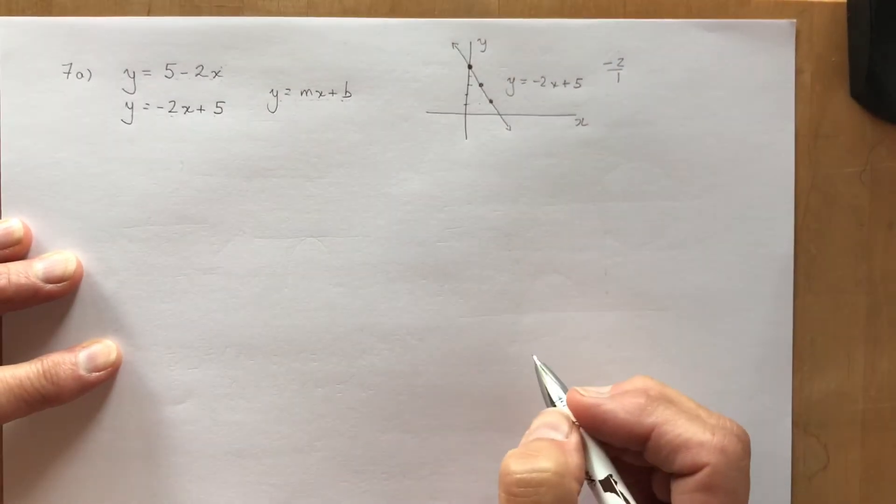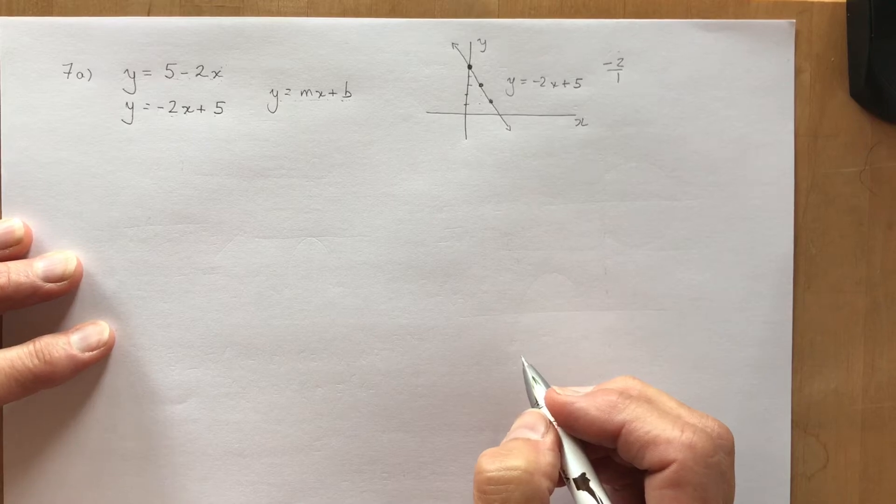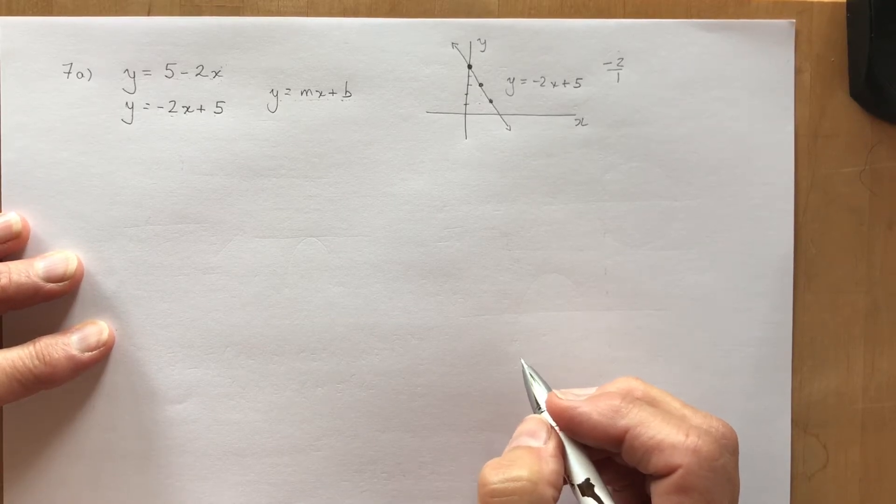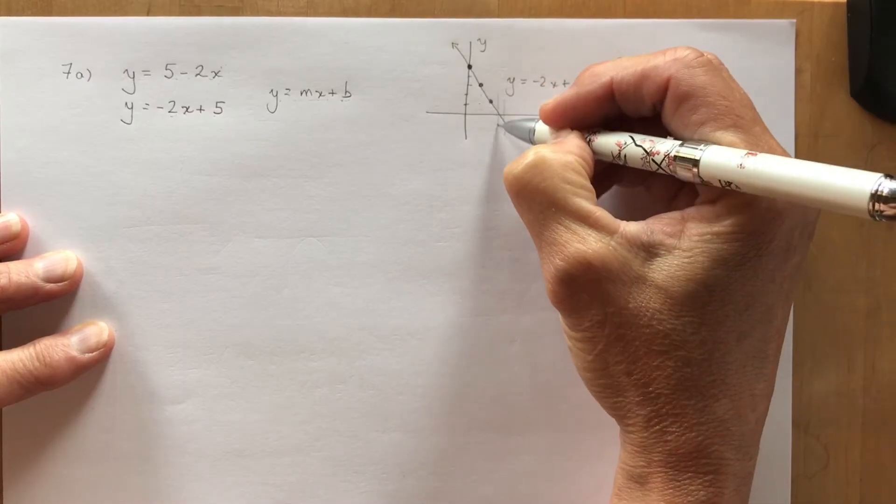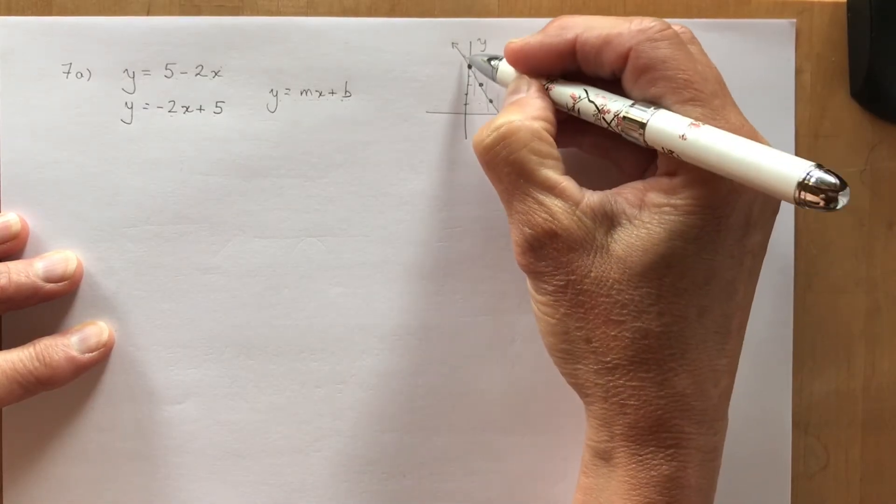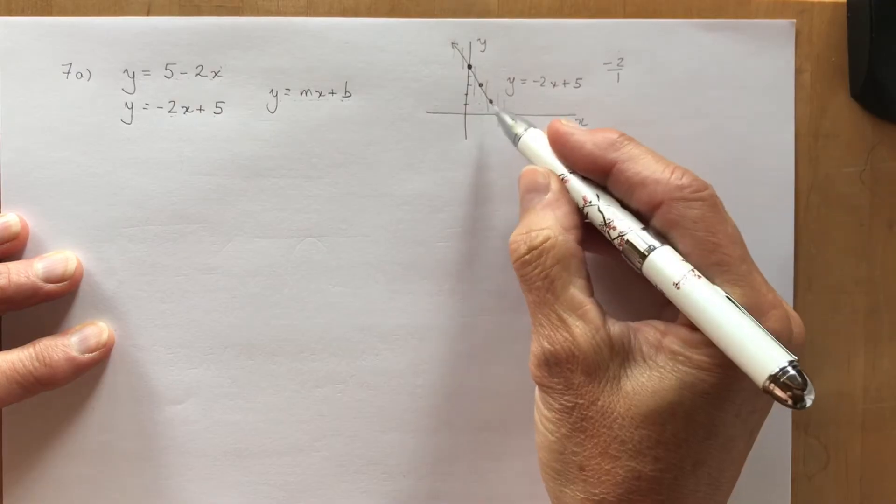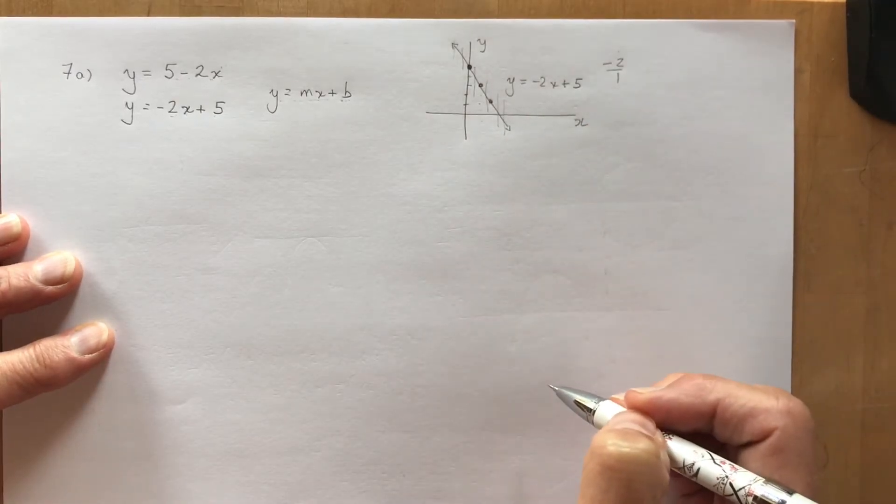Now the question is, is this a function? Well of course it's a function. It's a line and if I do a vertical line test which means I draw vertical lines here, you can see that every value of x has one and only one value for y.